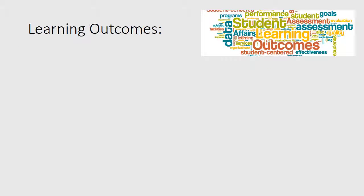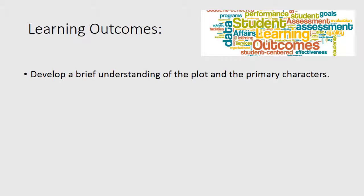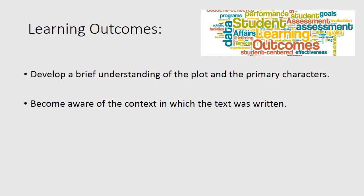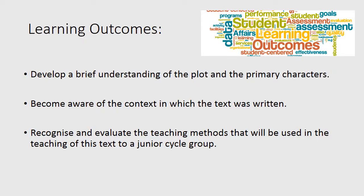The learning outcomes for today: it is hoped that each of you will develop a brief understanding of the plot and the primary characters, that you will become aware of the context in which the text was written, and that you will recognise and evaluate the teaching methods that will be used in the teaching of this text to a Junior Cycle group.